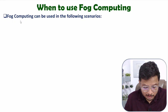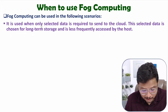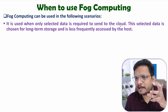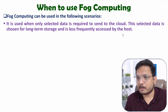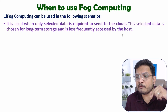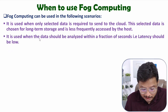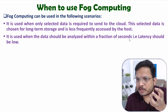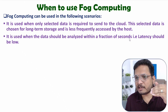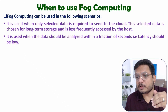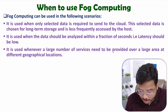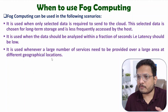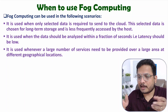Fog computing is used when only selected data needs to be sent to the cloud — selected data chosen for long-term storage that is less frequently accessed. Recently accessed data stays in the fog node. It is used when data should be analyzed within a fraction of a second, meaning lower-latency applications such as emergency systems in hospitals where a patient's condition is critical and lower latency is required. It is also used when a large number of services need to be provided over a large geographical area.